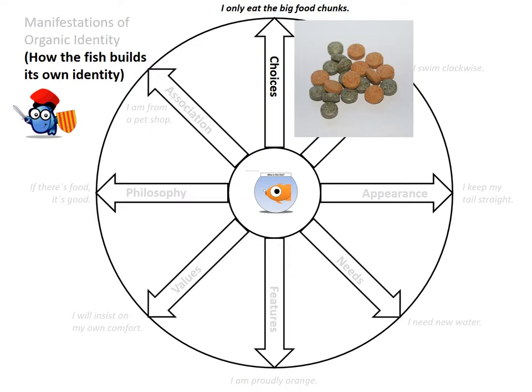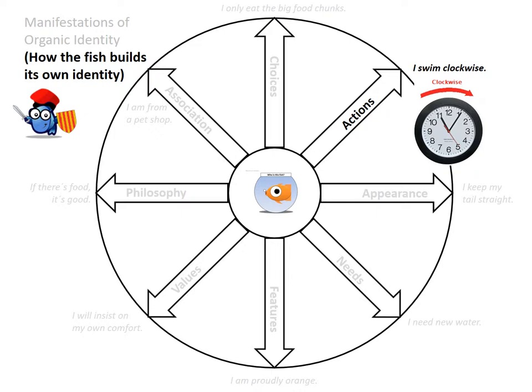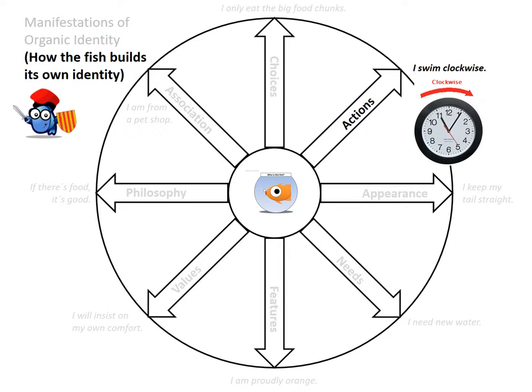So, the goldfish might describe himself as such or as follows. I only eat the big food chunks. You might have observed this in the goldfish. He doesn't like the small ones. He is that goldfish that eats only the big food chunks. And maybe that goldfish also only swims clockwise in his glass. And tends to prefer to keep the tail straight rather than tip to the side.